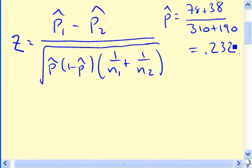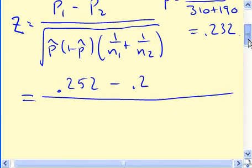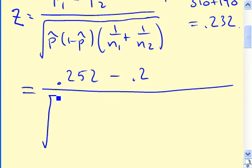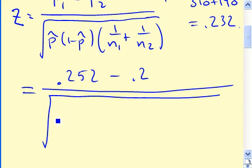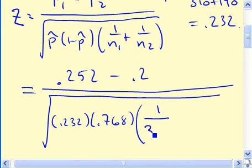Alright, so what we do now is we've got this complicated-looking test statistic, but really, it's just going to be a bunch of numbers. We just have to plug everything in and be careful with the calculations. So, P1 hat is 0.252. P2 hat is 0.2. Take that and we're going to divide by the pooled proportion, so 0.232, and then multiplied times 1 minus 0.232, 0.768. And that gets multiplied by 1 over N1, so that's 1 over 310, plus 1 over N2, 1 over 190.